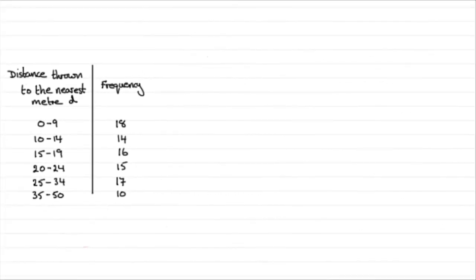Hi, now in this tutorial what I want to do is show you how we draw histograms. What I've got here is a grouped frequency table. It records the distance thrown by a number of people throwing a ball.